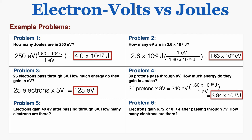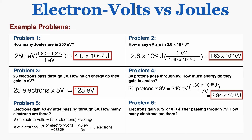Problem five says electrons gain 40 electron volts after passing through 8 volts — how many electrons are there? Since the number of electron volts equals the number of electrons times the voltage, I rearrange to get the number of electrons equals the number of electron volts divided by the voltage. Plugging in gives 40 divided by 8, which equals 5 electrons.